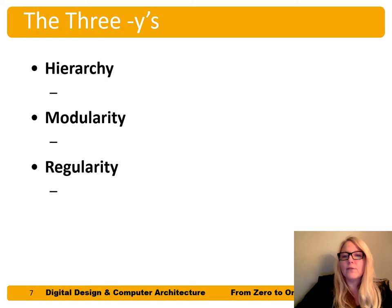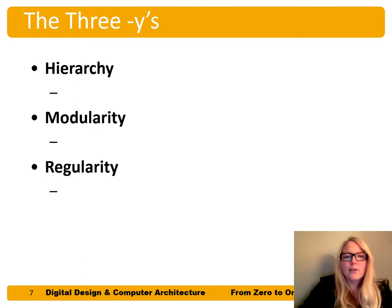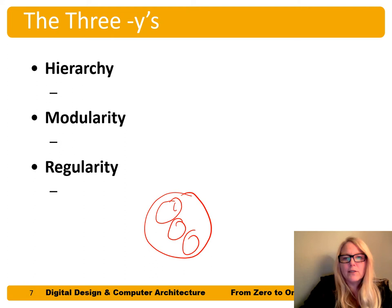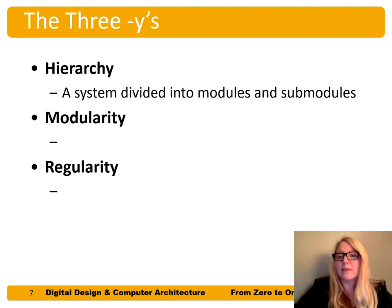The last way we deal with complexity is using the principles of the three Y's — hierarchy, modularity, and regularity. Hierarchy means having modules, sub-modules, sub-sub-modules. For example, a university has colleges within it, and within those colleges are departments, and within those departments are classes. It's breaking or dividing the system into modules and sub-modules.